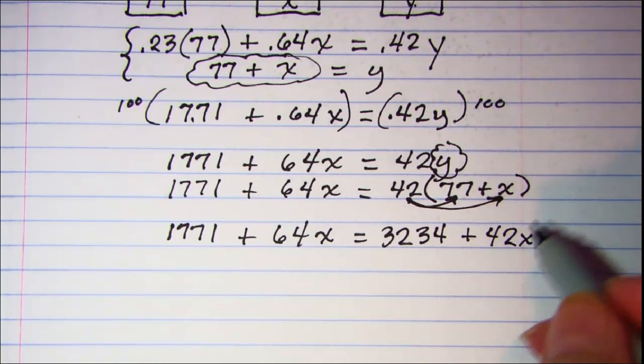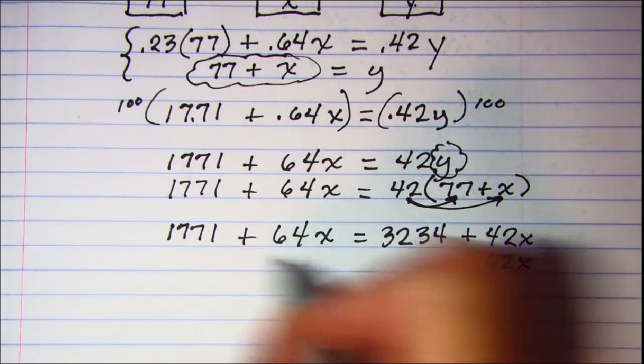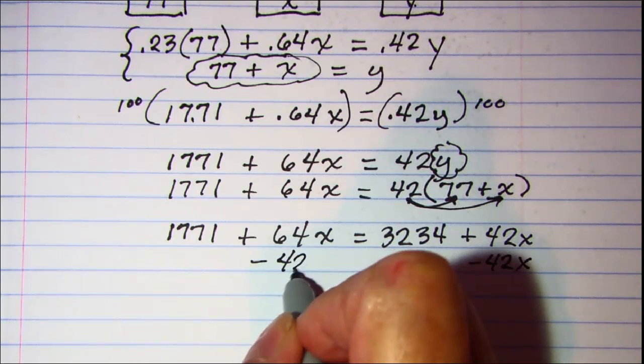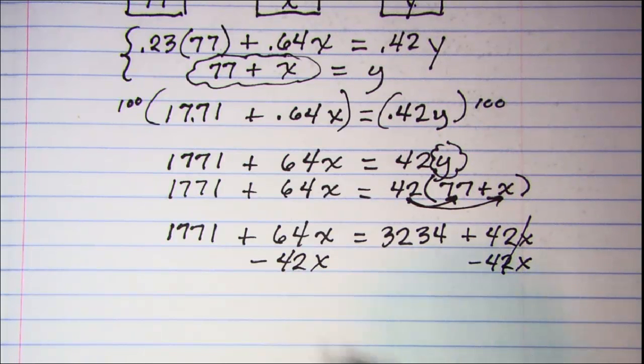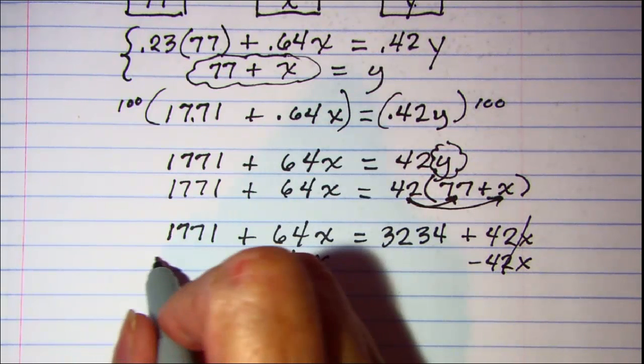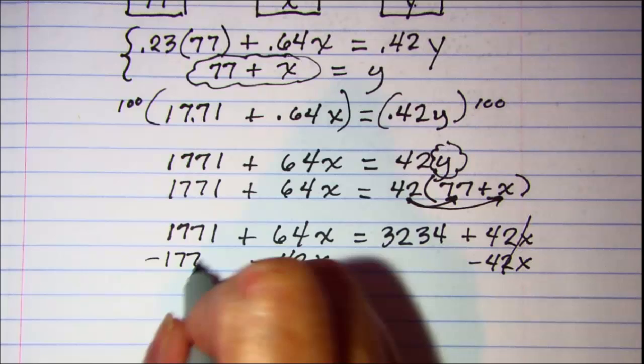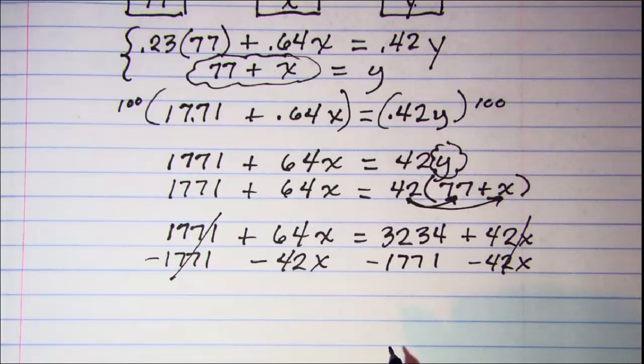I'll move my x's to the left side so subtract 42x from both sides. That'll cancel that term off and then let's move this 1,771 to the right side. So subtract that and that'll cancel that term off.